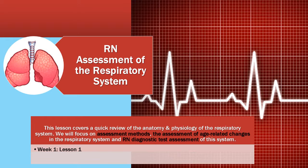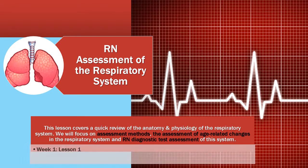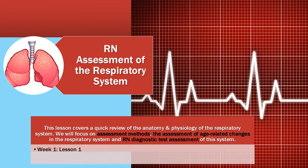The respiratory system includes the upper airways, the lungs, the lower airways, and the alveolar air sacs. The respiratory system is vital in helping the body meet its needs for oxygenation and tissue perfusion. The two purposes of breathing are to provide oxygen to tissue perfusion so that cells have enough oxygen to take part in metabolism, and also to remove carbon dioxide and the major waste byproducts of metabolism.